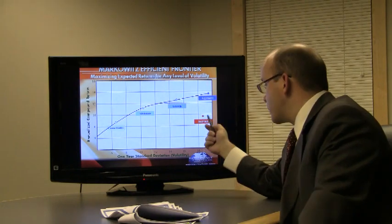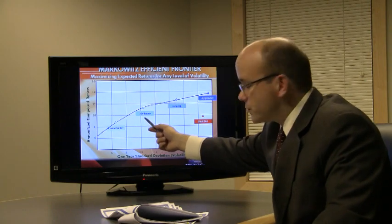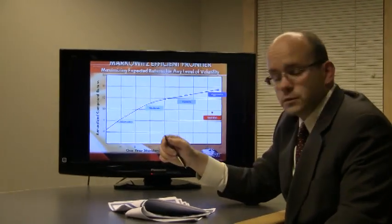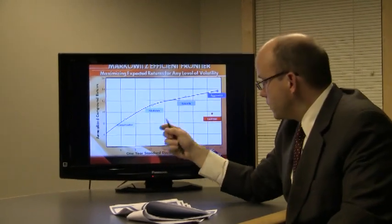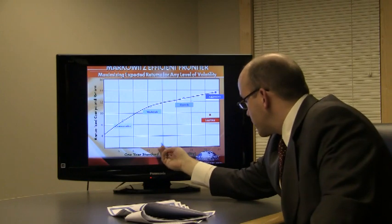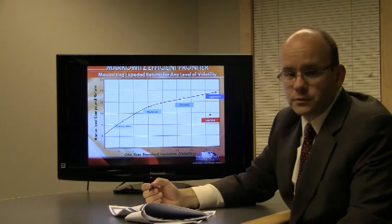Or if a given investor was comfortable with that level of return, well, then we could slide him down and dial down the volatility and risk in his portfolio all the way down to almost the conservative portfolio on the Efficient Frontier. Get the same 9% a year approximately, while reducing the risk from 18% to a mere 7%.